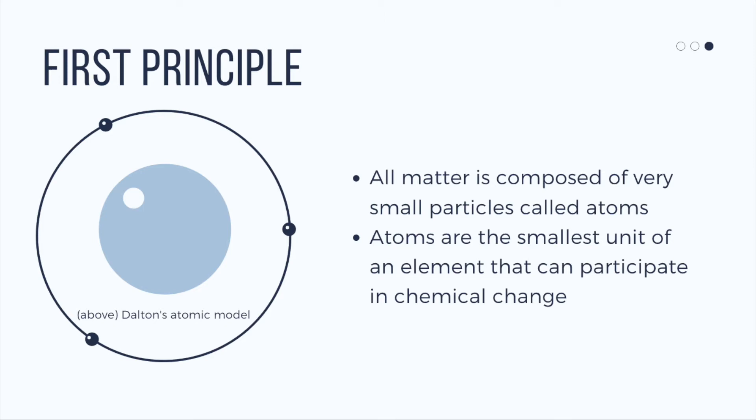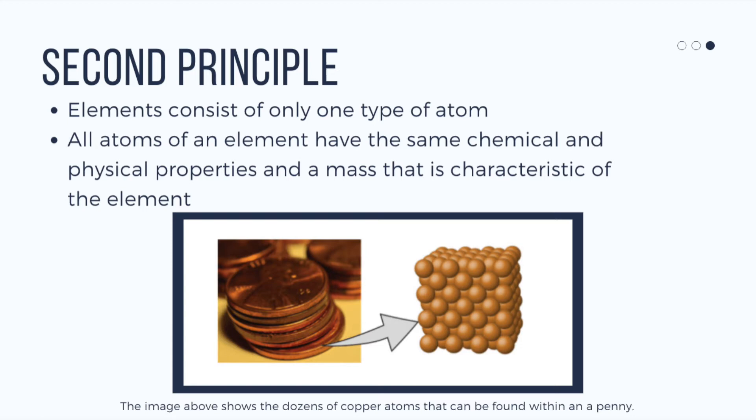The next principle states that elements consist of only one type of atom. So all atoms of an element have the same chemical and physical properties and a mass that is characteristic of the element.